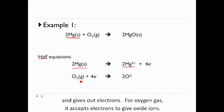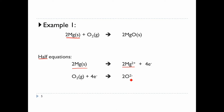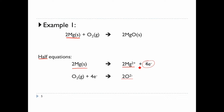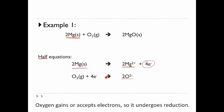For oxygen gas, it accepts electrons to give oxide ions. From this example, we see that magnesium loses or gives out electrons, so it undergoes oxidation. Oxygen gains or accepts electrons, so it undergoes reduction.